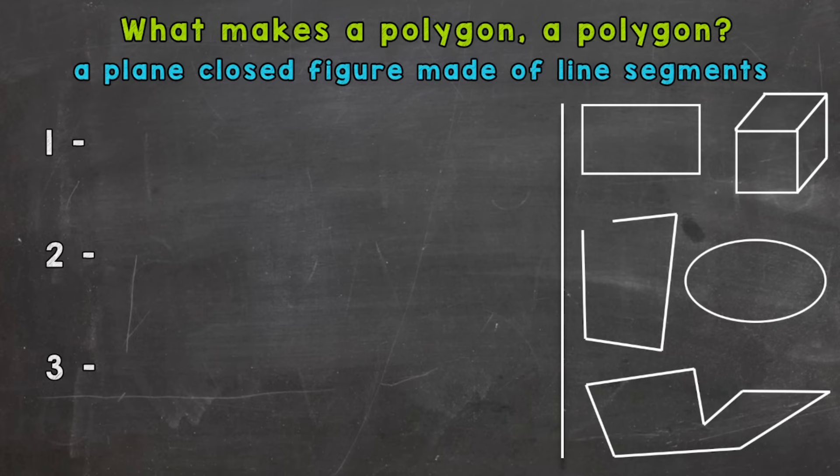When it comes to polygons there's a checklist, and a polygon has to have a check next to each of these three characteristics. We're going to go through what those three characteristics are.